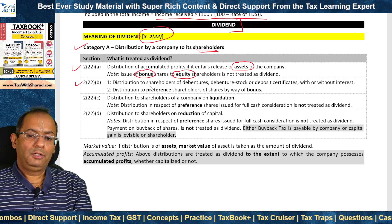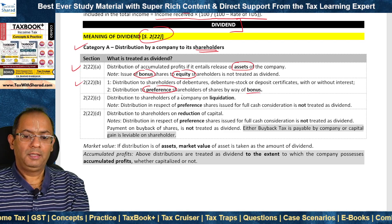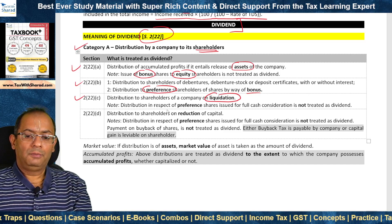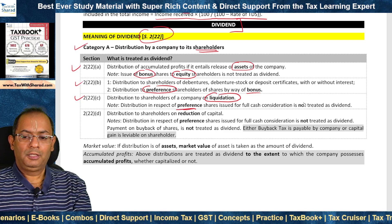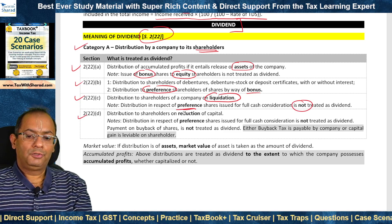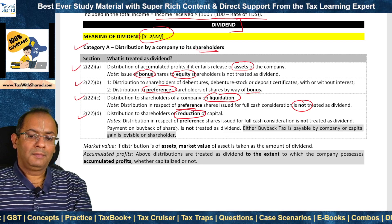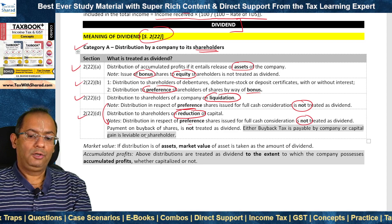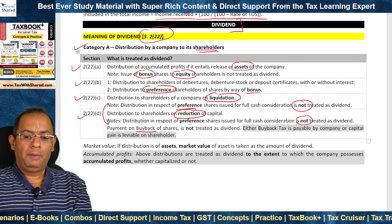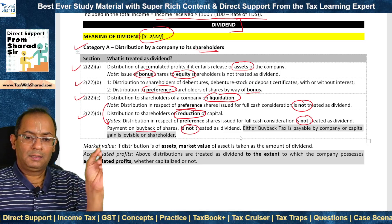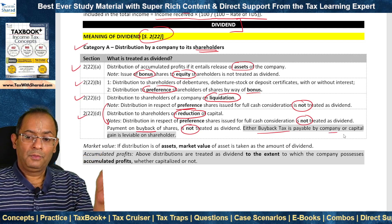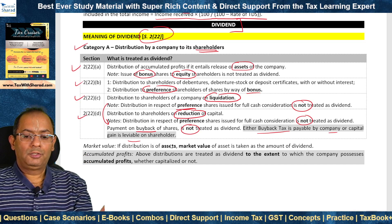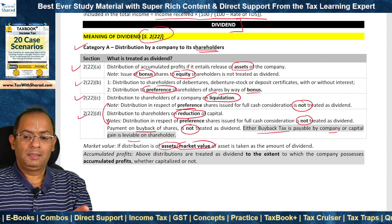Clause (b): distribution to shareholders of debentures, debenture stock or deposit certificates with or without interest, and distribution to preference shareholders of bonus shares — both treated as dividend. Clause (c): distribution to shareholders of a company on its liquidation is treated as dividend, but distribution in respect of preference shares issued for full cash consideration is not. Payment made by a company on buyback of shares is not treated as dividend — that is covered under capital gain. If distribution is not of money but of assets, the market value of the asset is taken as the amount of dividend.